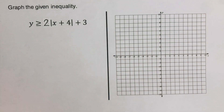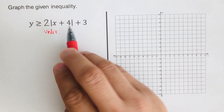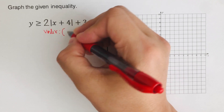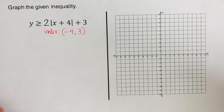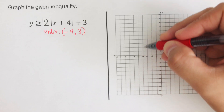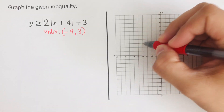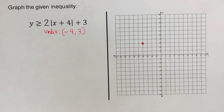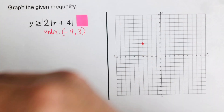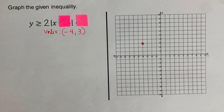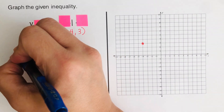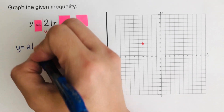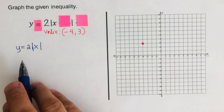We go over the third problem. First we determine the vertex — switch and keep. Since that is positive we write negative four, and we keep positive three. We plot the vertex at negative four, positive three — go up three here. Now we determine the rest of the dots. Cover h and k, change the inequality to an equal sign, and the equation we get is y equals 2 times the absolute value of x. Now we draw the table.